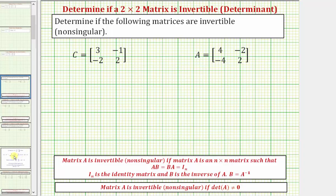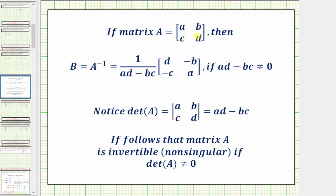To explain why this is: if we have a matrix A where these are the elements, then A inverse is equal to one divided by the quantity AD minus BC, times a two-by-two matrix. To form this matrix, we interchange the positions of elements A and D, and change the signs of elements B and C. This will always be the inverse of a two-by-two matrix as long as AD minus BC doesn't equal zero, because if it did, we'd have division by zero, which is undefined. This value AD minus BC is actually the determinant of matrix A.